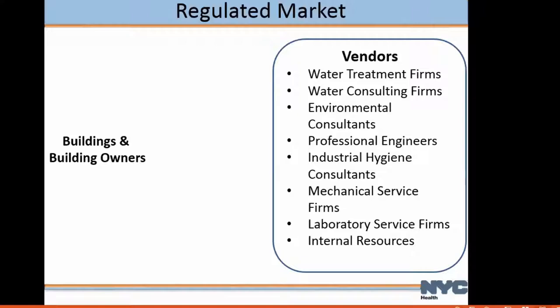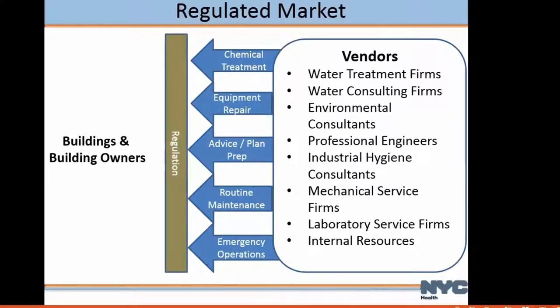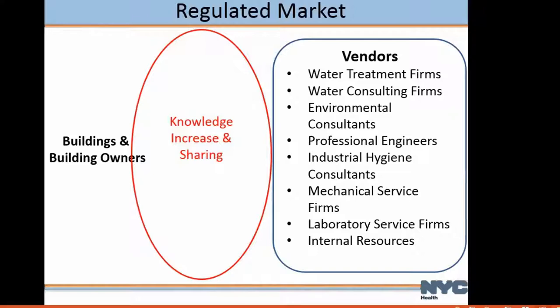There are many different types of folks — labs, engineers, industrial hygienists — providing lots of different products and services. Before the regulations, vendors were out there selling products and telling you about the risk. Now all of that goes through the filter of the regulations for cooling tower systems. Although we regulate the building owners, we understand those building owners get their knowledge from the vendors. That area is where knowledge gets disseminated and shared, and those regulations mediate that relationship.